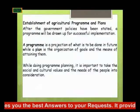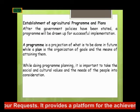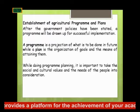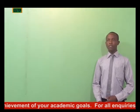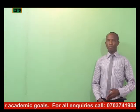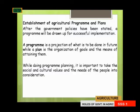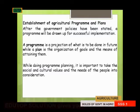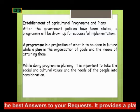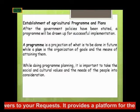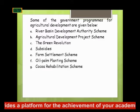The next role of government in agricultural development is the establishment of agricultural programs and plans. After the government's policies have been stated, a program will be drawn up for successful implementation. A program is a projection of what is to be done in the future, while a plan is the organization of goals and the means of attaining them. While doing program planning, it is important to take the social and cultural values and the needs of the people into consideration.